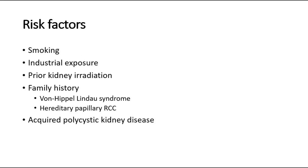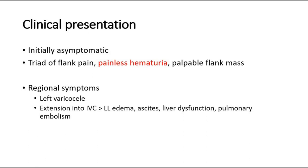Usually patients are initially asymptomatic, and renal cell carcinoma may be detected incidentally on imaging studies. If symptoms do present, the classic triad consists of flank pain, painless hematuria — blood in the urine without pain — and a palpable flank mass. This triad occurs in around 11% of cases. Painless gross hematuria is the most common presenting symptom, occurring in around 50% of cases. When hematuria is painless, malignancy such as renal cell carcinoma or bladder tumor must be considered.